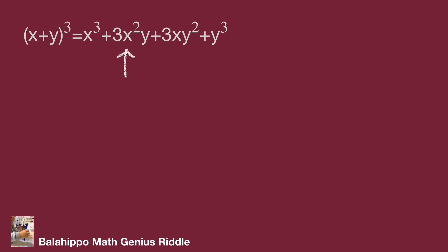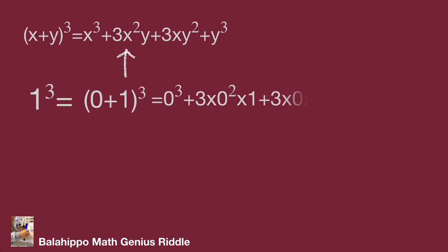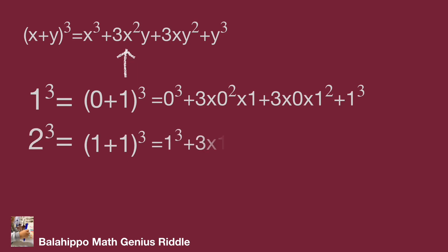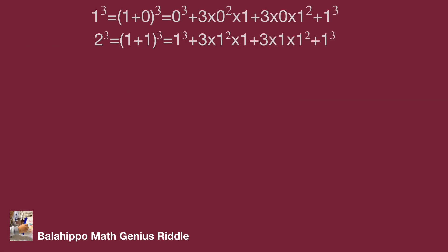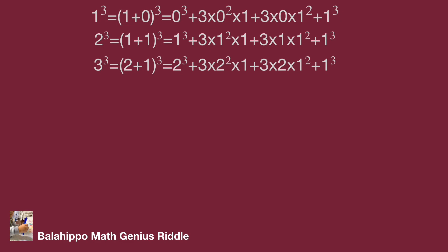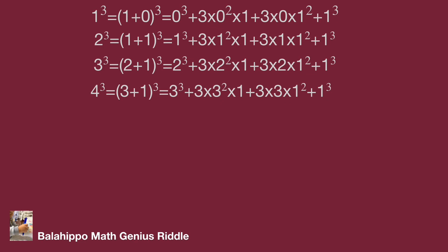Let's take a look: quantity (1 plus 0) cubed equals 1 cubed. Expanding this becomes 0 cubed plus 3 times 0 square times 1 plus 3 times 0 times 1 square plus 1 cubed. And quantity (1 plus 1) cubed equals 2 cubed, which equals 1 cubed plus 3 times 1 square times 1 plus 3 times 1 times 1 square plus 1 cubed. Furthermore, generate quantity (2 plus 1) cubed equals 3 cubed and quantity (3 plus 1) cubed equals 4 cubed.